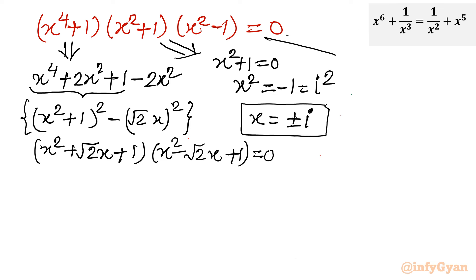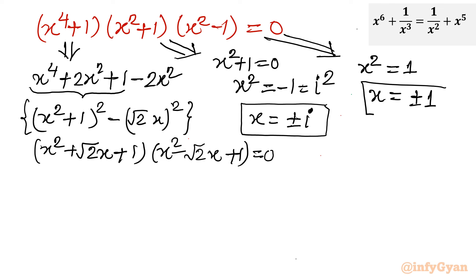From the third factor, x^2 - 1 = 0 gives x^2 = 1, so x = ±1. Now applying the quadratic formula to the two quadratic factors x^2 + √2·x + 1 = 0 and x^2 - √2·x + 1 = 0. Since the coefficients are ±√2, I can handle both together: the discriminant gives b^2 - 4ac = 2 - 4 = -2.